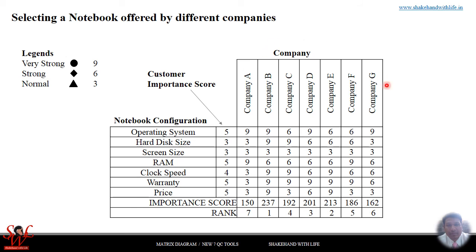In Quality Function Deployment, we need to build a house of quality using different matrices. The house of quality is actually an extension of the matrix diagram. We compare different types of variables: what versus what, how versus how, and what versus how, in building the house of quality. I hope you now have a clear understanding of the matrix diagram and how to use it to solve problems by building a correlation between two types of variables using this matrix diagram tool.